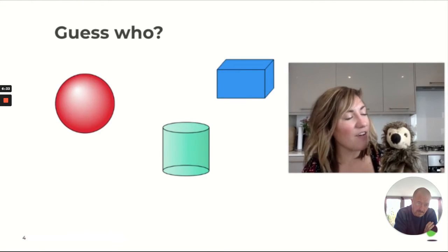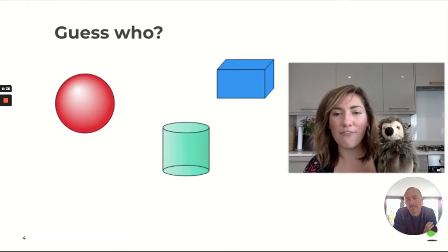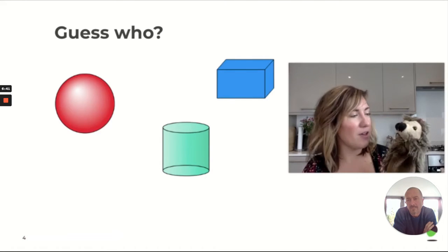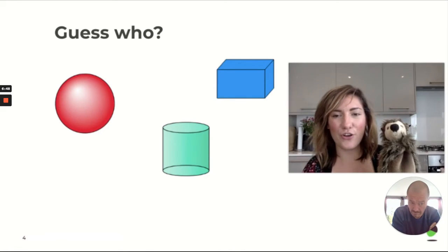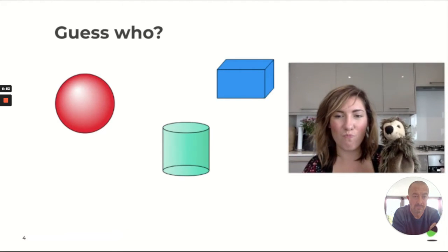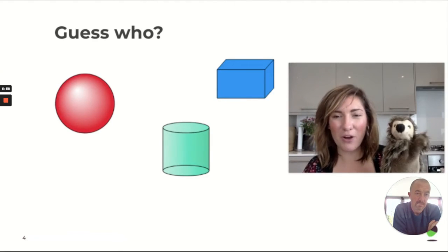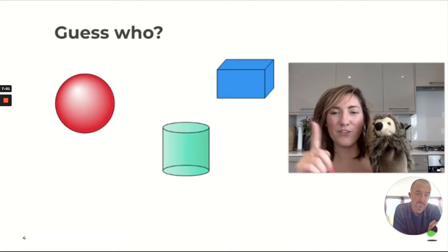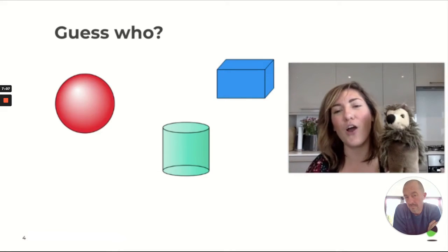Harold says, I have a curved surface and two flat faces. Hmm. Who am I? Which shape do you think Harold's talking about? It has a curved surface and two flat faces. Well done. If you pointed to the cylinder at the bottom, you're so right. It's got a curved surface around it, and then it's got two flat faces. Way to go.